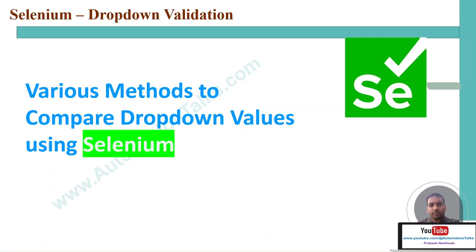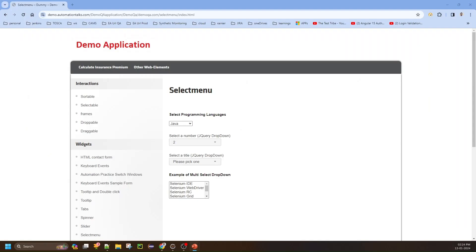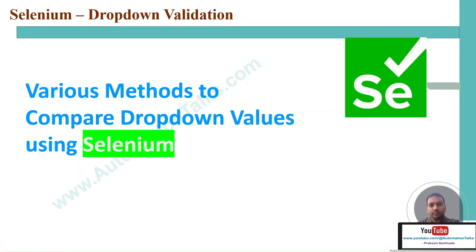It looks very simple when you talk about just verifying drop-down values, but say your drop-down contains hundreds or even 200 values — it's really difficult to verify each and every value, including spelling, for each instance of testing. Considering all these aspects, it is really important to perform the validation and comparison of drop-down values against your expectations.